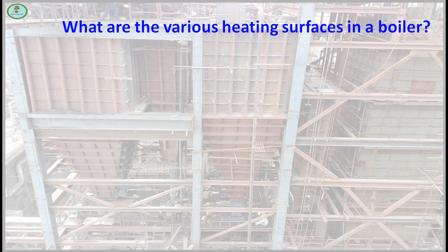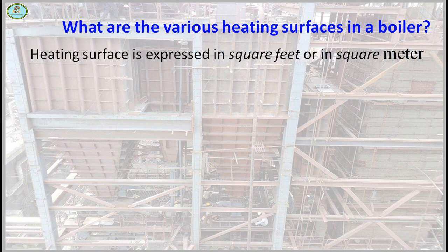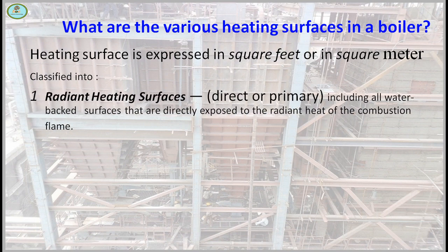Various heating surfaces — basically three types of heating surfaces are used in a boiler. Heating surface is expressed in square feet or square meters. The first one is radiant heating surface, which includes all water-bed surfaces that are directly exposed to the radiant heat of the combustion flame.